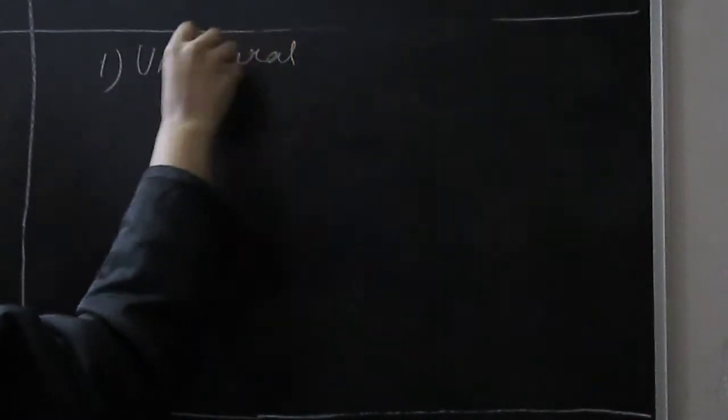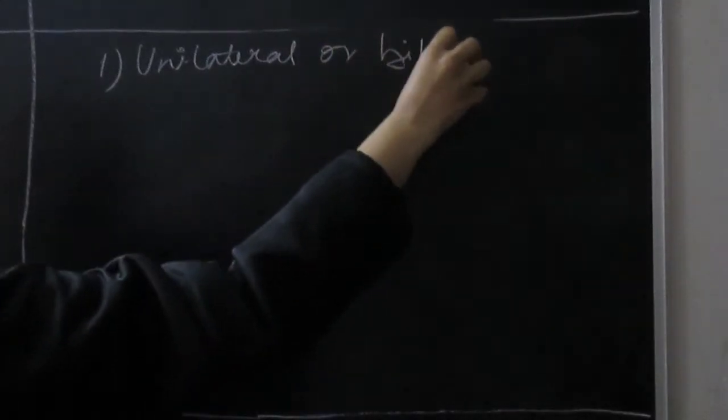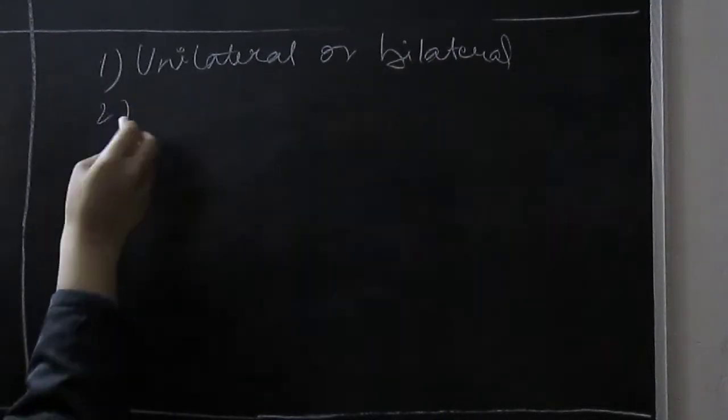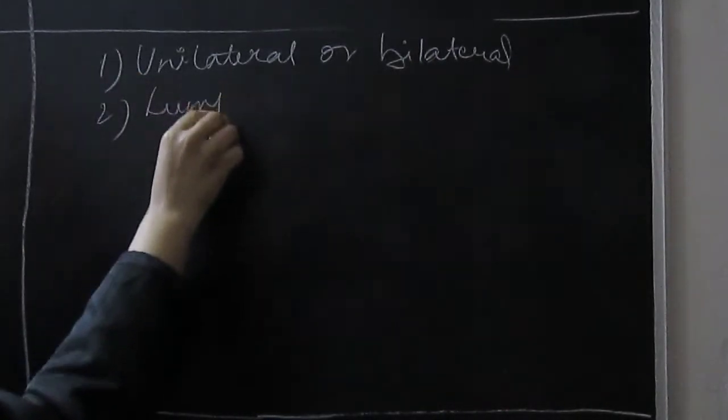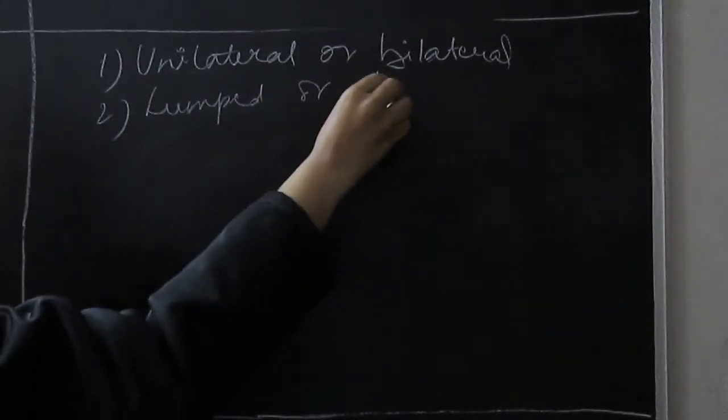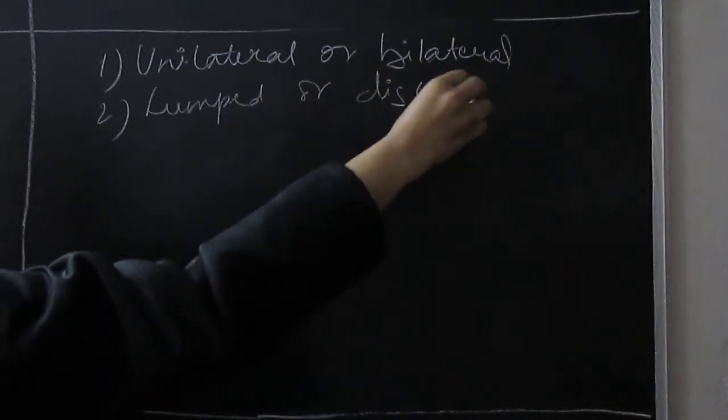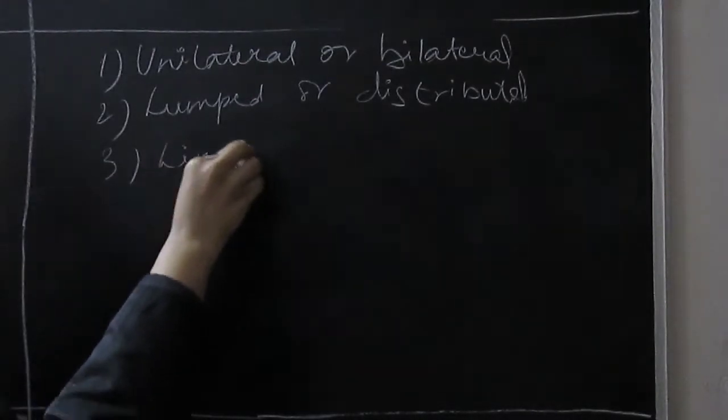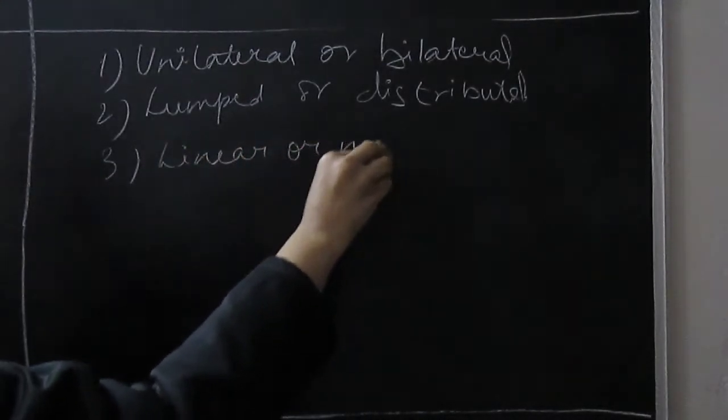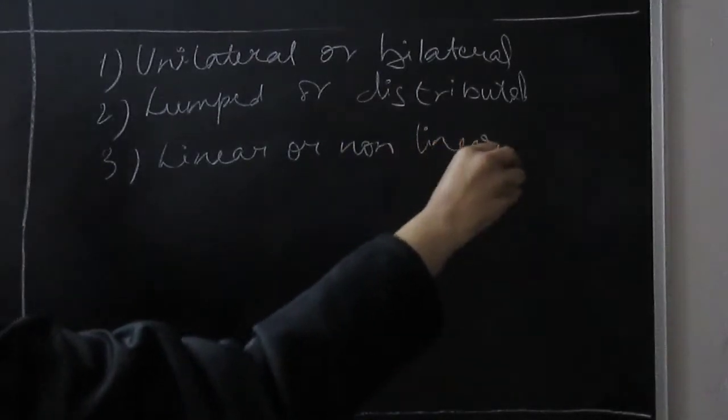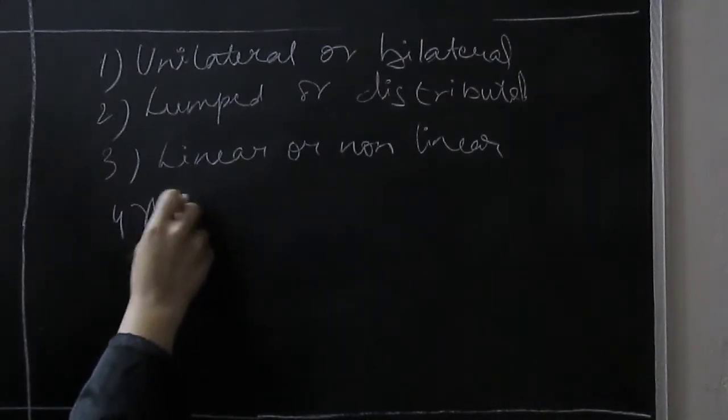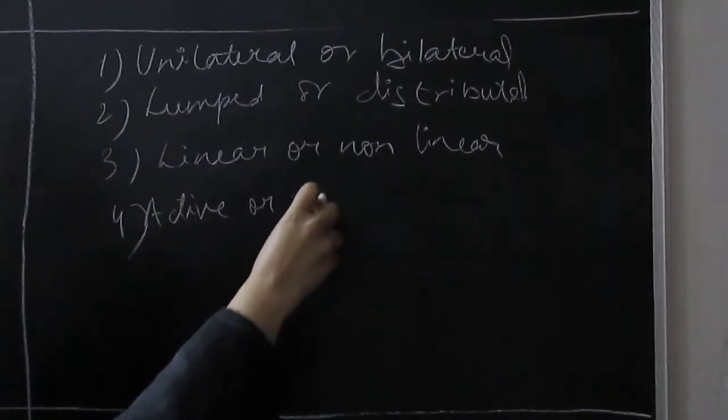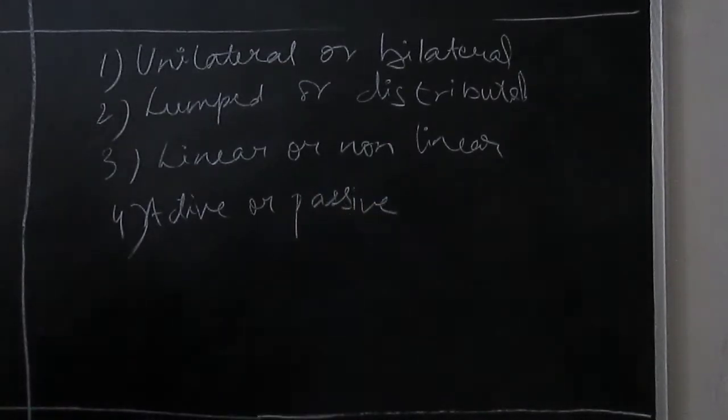The circuit elements have four types: unilateral or bilateral, lumped or distributed, linear or nonlinear, and fourth one is active or passive.